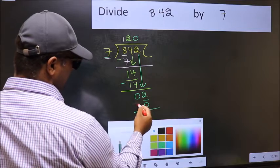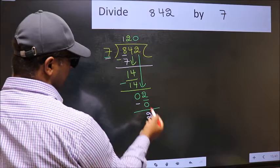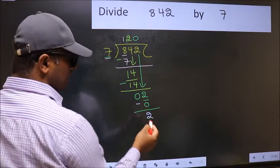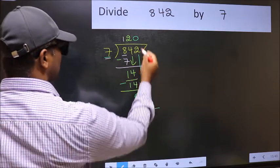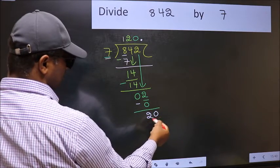Now, you should subtract. 2 minus 0, 2. Over here, we did not bring any number down. And, 2 is smaller than 7. So, now, you can put dot and take 0. So, 20.